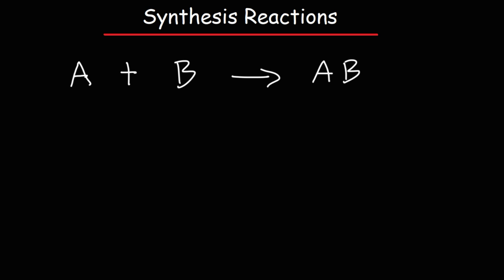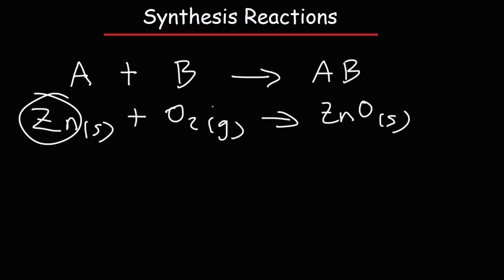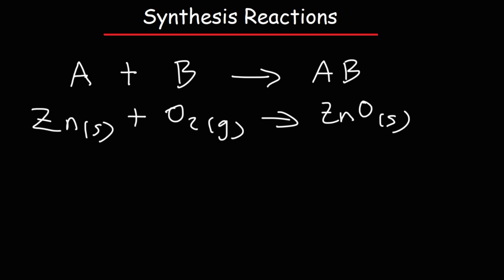So what is a synthesis reaction? This is a reaction where you have multiple reactants combining to form a single product. So A plus B turns into AB. For example, if we take zinc metal and react it with oxygen gas, this is going to turn into a single product, zinc oxide. Notice that we have two smaller components and we're generating a single product. That is a synthesis reaction, which is also called a combination reaction.